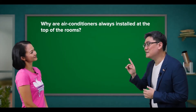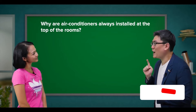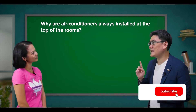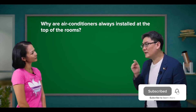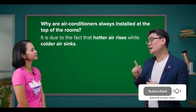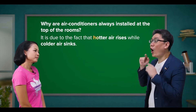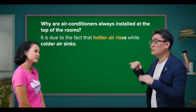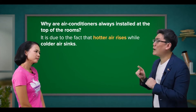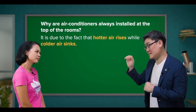There is a reason as to why air conditioners are always placed at the top instead of at the bottom. It is due to the fact that hotter air rises while colder air sinks.